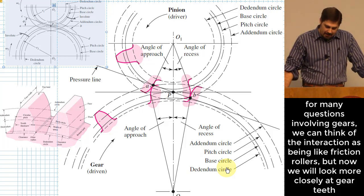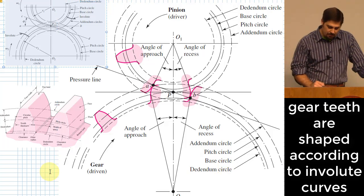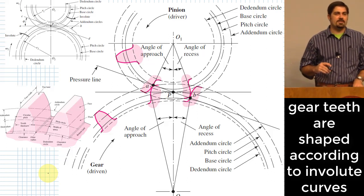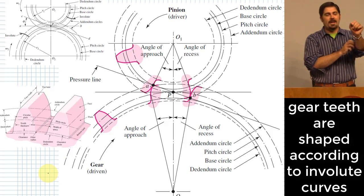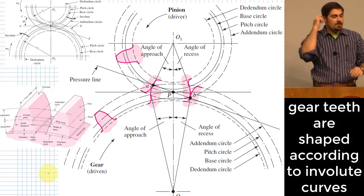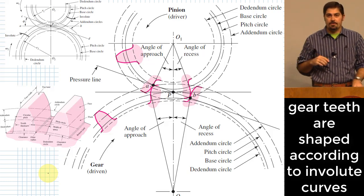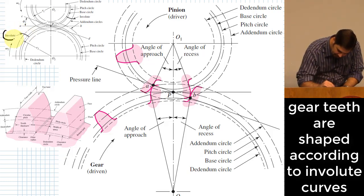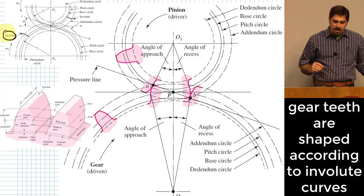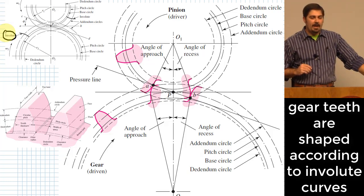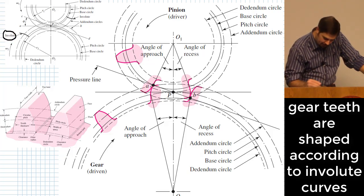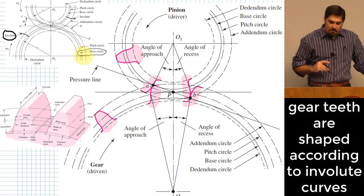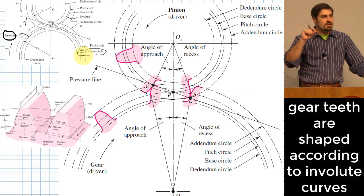Where I want to start is with the idea of what shape a gear tooth actually is. The shape of a gear tooth uses a curve called an involute curve. We have an example of that here — this little involute curve right here. The way you generate an involute curve is you imagine wrapping a piece of string around a circle called the base circle, which is used to generate the shape of these involute curves.